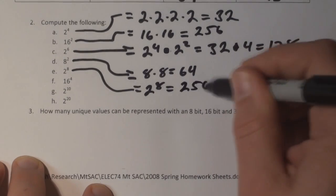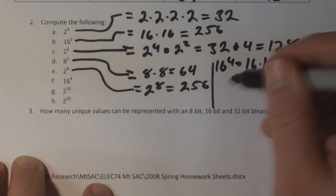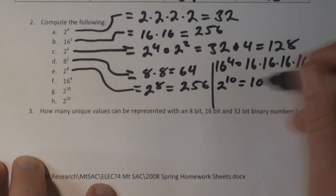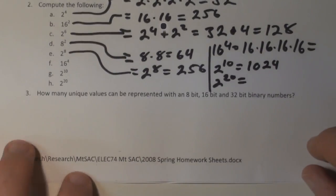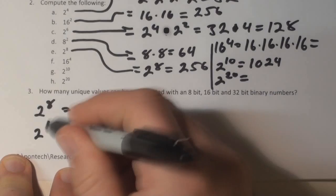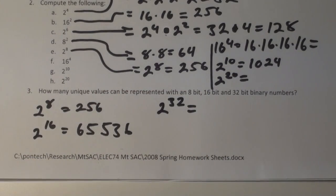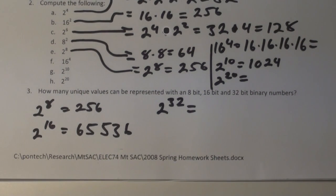16 to the 4th is 16 times 16 times 16 times 16. 2 to the 10th is 1,024. 2 to the 20th is 1,048,576. 2 to the 8th is 256 possible numbers. 2 to the 16th is 65,536 possible combinations. 2 to the 32nd is 4 billion and some change.